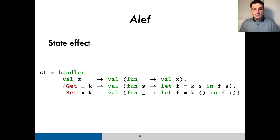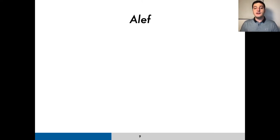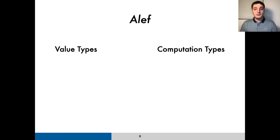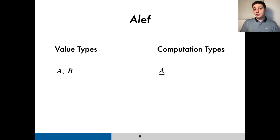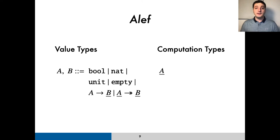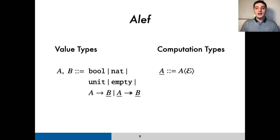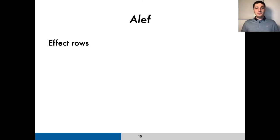Now, we would like to be able to write this handler's type, but before doing so, let's quickly go over Aleph's type system. As usual in this kind of effect systems, Aleph's types are split into value and computation types. Borrowing FC's notation, we'll write the former with letters like a and b, and the latter with a line under the letter. Value types, that correspond to the values that a program can return, include the base types, functions, and handlers, which we write with this double-headed arrow. Computation types are formed by the type of the computation's return value alongside an effect row, which we write as epsilon, containing all the operations that the computation can invoke.